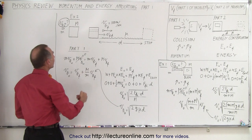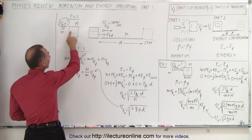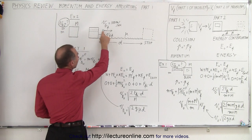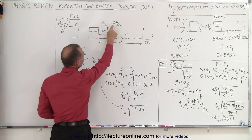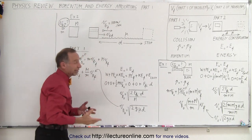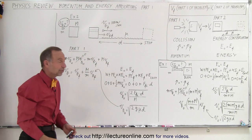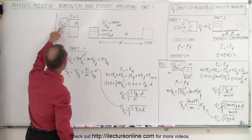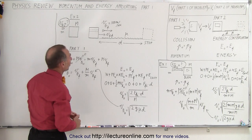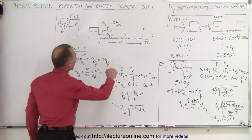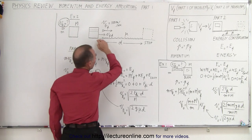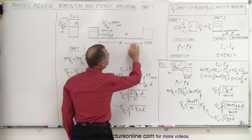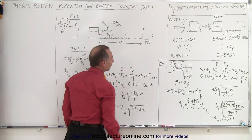A second example: the bullet is fired and goes right through the block, emerging from the other side at some final velocity — let's say 100 meters per second. Again, we're trying to find the initial velocity of the bullet, assuming the block slides over a rough surface with a coefficient of friction and eventually comes to a stop.